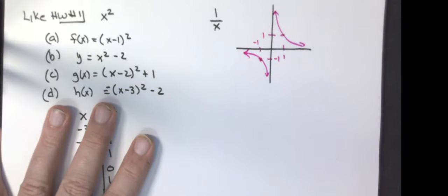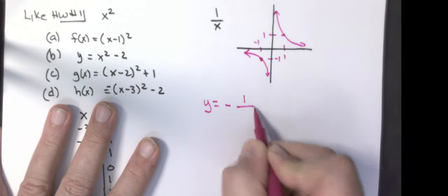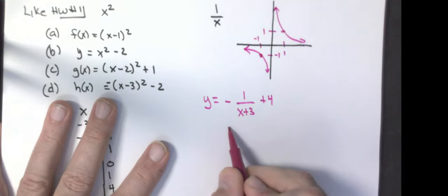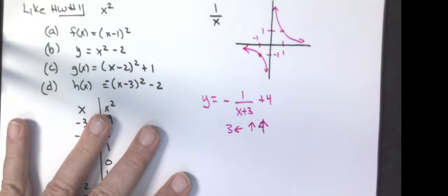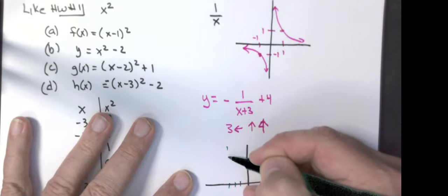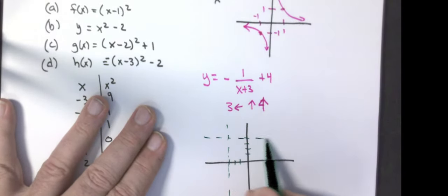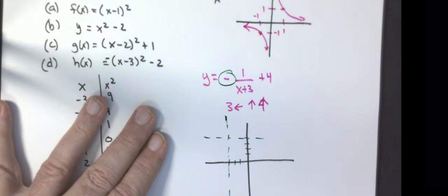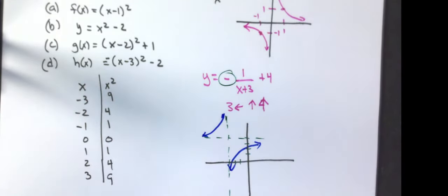An example of one here would be if I had y equals negative one over x plus three plus four. First thing I'm going to do is go three to the left, four up. What that means is my asymptotes, my vertical and horizontal asymptotes are shifting. I'm going three to the left. I'm going to go up four. But this negative means my graph flips upside down. This part that was down below my asymptote is now going to be above my asymptote. This part that was above my asymptote is now going to be below my asymptote. That's what I would do to come up with a quick sketch of that.